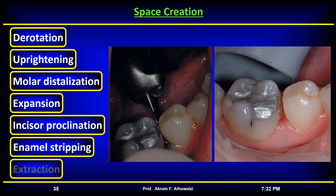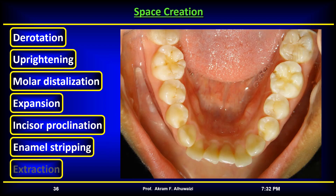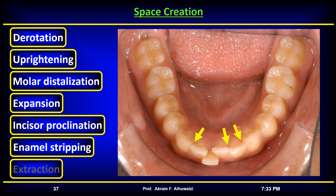A high-speed air turbine handpiece can be used to remove enamel from the posterior teeth; however, both the teeth and periodontium can be damaged unless care is taken. Removal of filling material is preferred over sound enamel when applicable. It is important to realize that reduction of enamel should be done after aligning the teeth, because it is very difficult to reduce enamel in crowded areas. As some areas become aligned, those areas can be reduced, and as alignment progresses, other areas can then be reduced.